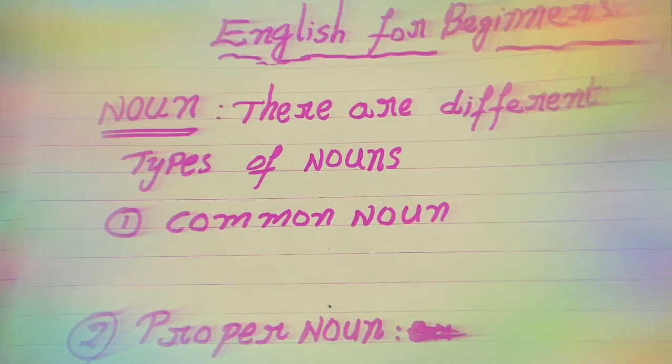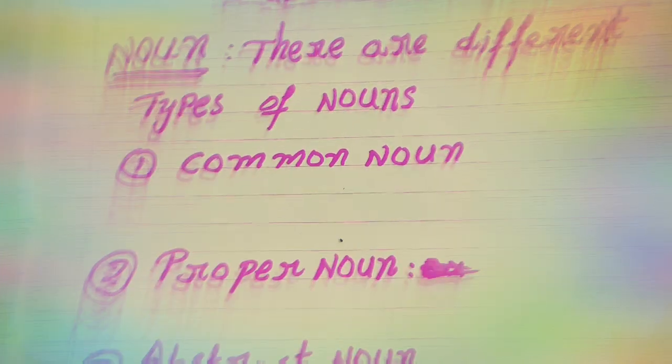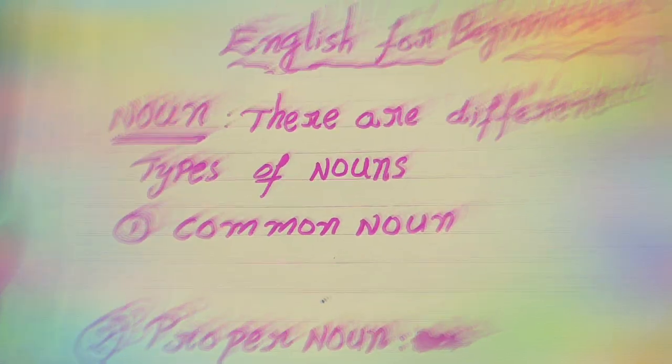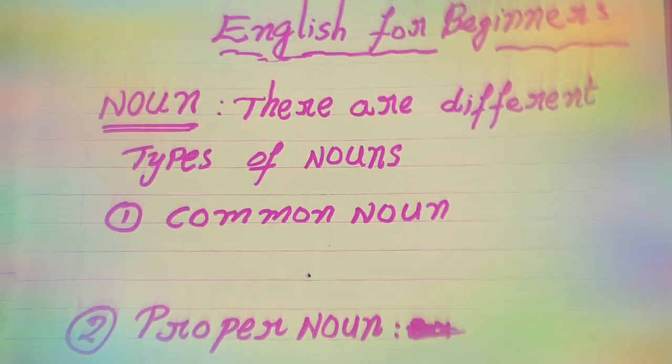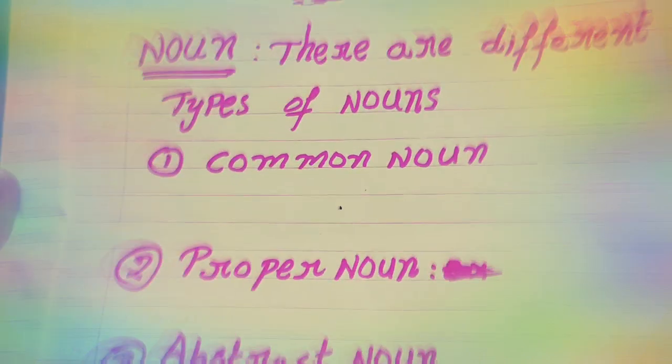These are river and ocean names. For mountains, examples include the Himalayas and Mount Everest.